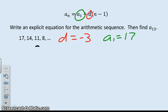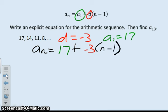So my equation is a sub n equals 17 plus negative 3 times n minus 1. That's the equation right there.